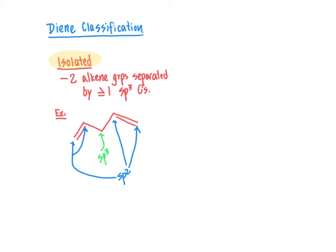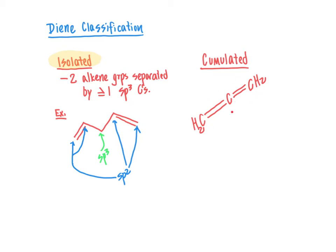A second type of diene is what we refer to as the cumulative diene or the accumulated diene. Much like a cumulative final rolls everything together into one, the cumulative or accumulated diene is a diene where you have the carbon-carbon double bonds running into one another. So the carbon-carbon double bonds in this situation have no other carbons in between them — you have directly adjacent carbon-carbon double bonds, with the carbon in the middle being part of two different alkene groups.